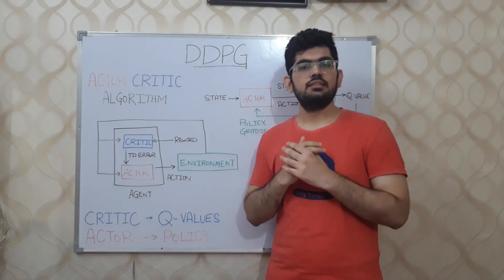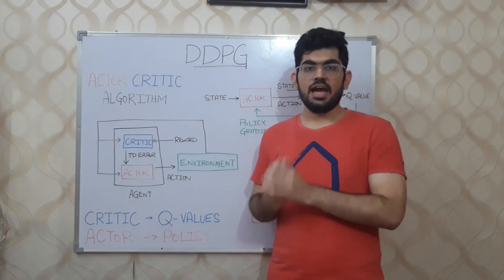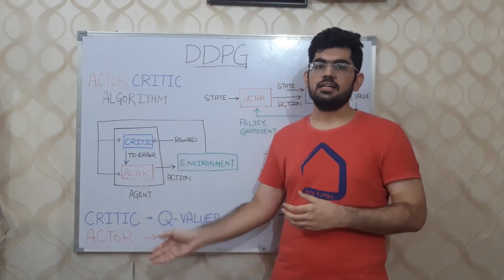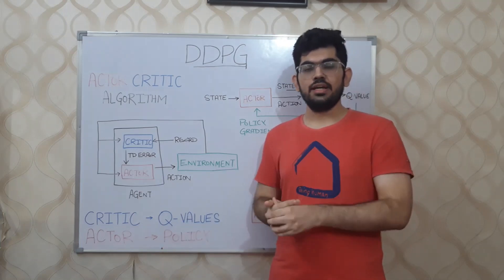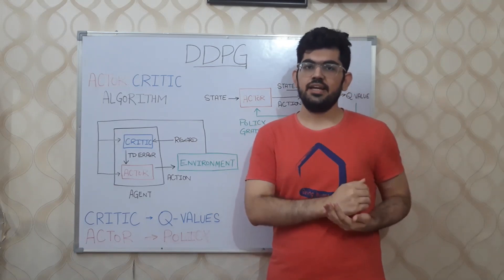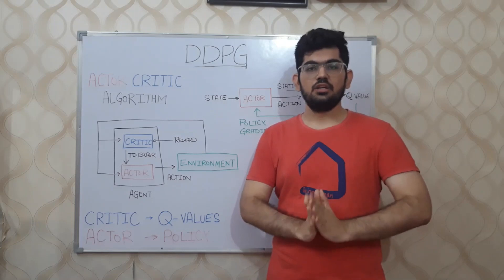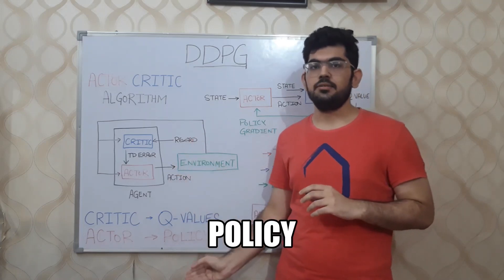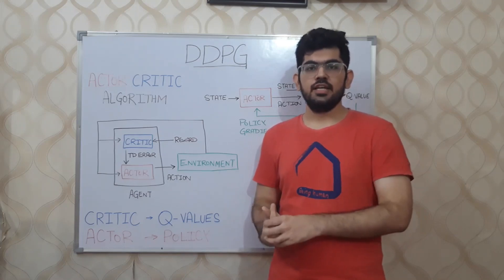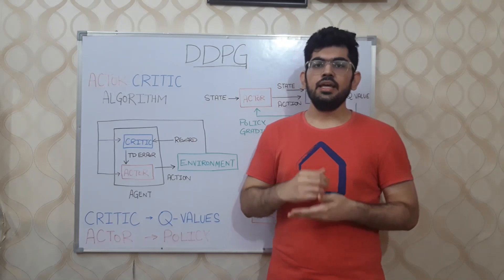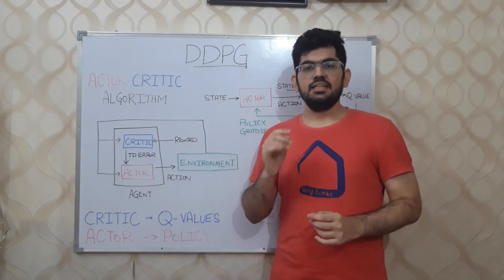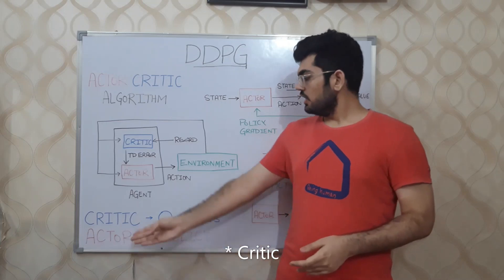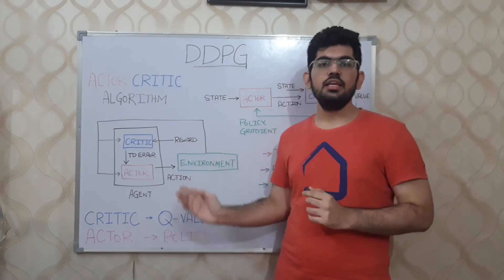The actor takes as input the current state of the agent and outputs the action that the agent can take. The critic takes in the state as well as the action generated by the actor, and as an output returns the goodness or the score of that action taken in that state. For the DDPG algorithm specifically, the critic is responsible for learning the Q-value and the actor is responsible for learning the policy. The Q-value measures how beneficial it is for an agent to take an action in a given state, while the policy is the set of actions that the agent can take.